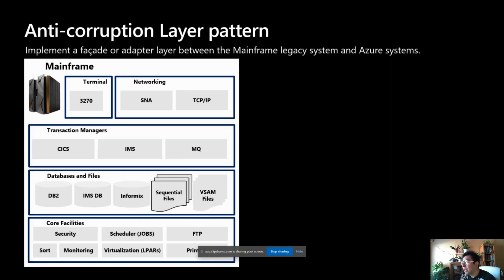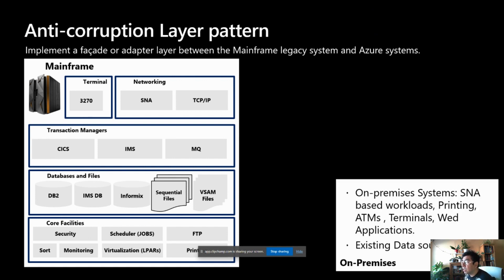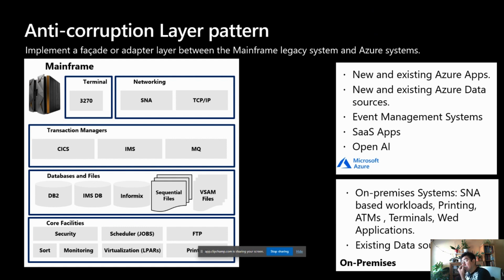In a mainframe, it is truly an ecosystem. You have terminal presentation, networking capabilities, transaction managers, databases, files, and core facilities. You also have on-premises systems built over the years — SNA-based workloads, printing, ATMs, terminals, web applications, and existing data sources — and you plan to add new cloud applications, Azure data sources, microservices, an event management system like Event Grid to manage notifications across microservices, SaaS applications, and OpenAI.